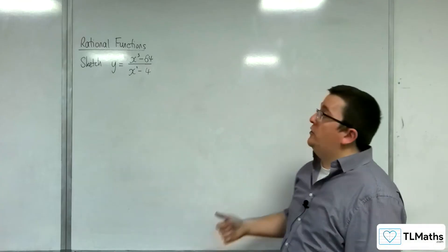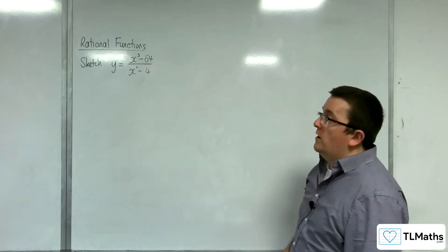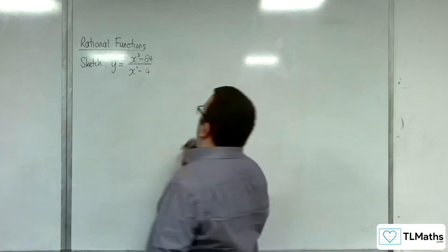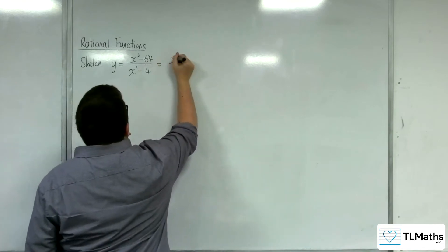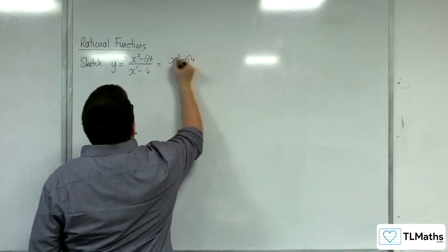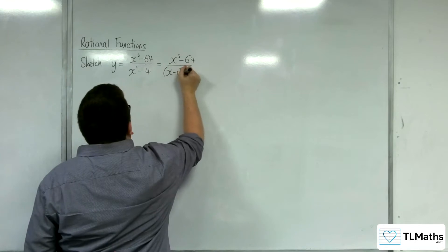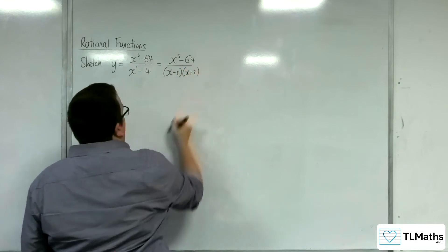In this video I'm going to be sketching y equals x cubed take away 64 over x squared take away 4. The denominator can be factorised to (x − 2)(x + 2). We'll do that first.